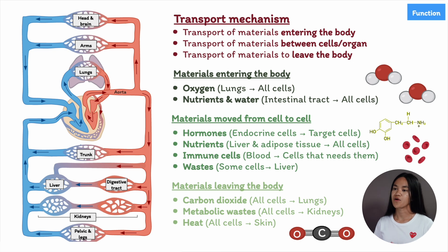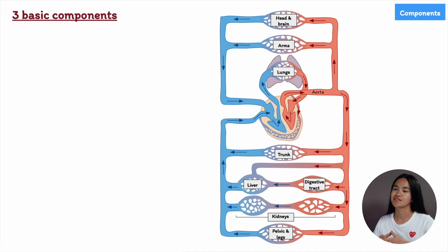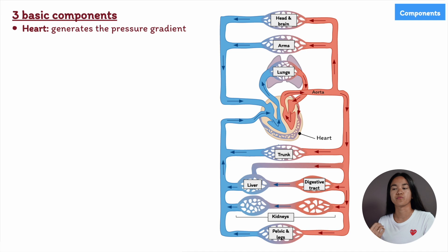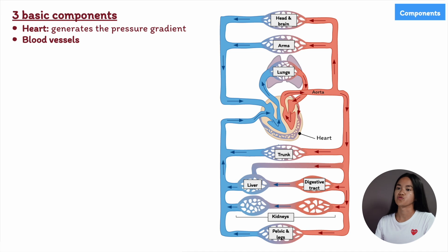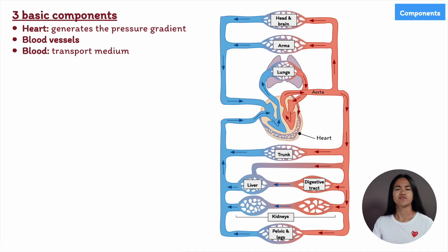Let's subtract complexity and break down the components of the circulatory system. The human circulatory system has three basic components: first, the heart, which is the pump that generates the energy to push blood through the system; second, the blood vessels, the tubes through which blood is directed; and third, the blood itself, which carries all those materials — oxygen, carbon dioxide, and waste products. Think of the blood vessels as slides and the blood as the water.